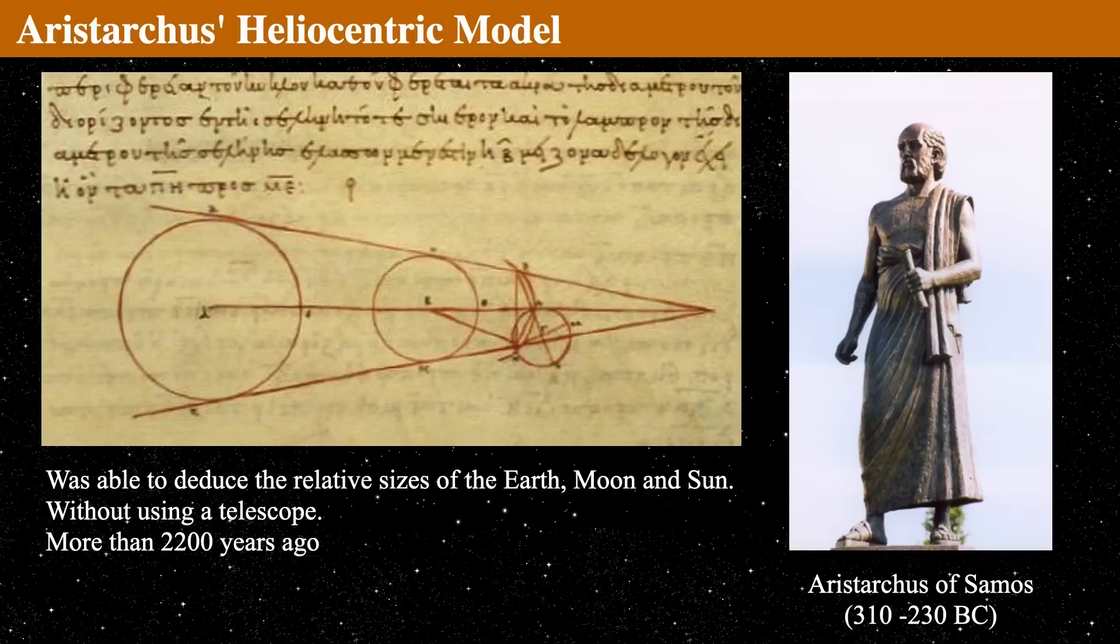And he was able to get a good estimate for the exact distance to the sun and the exact distance to the moon and their relative sizes as well. How did he do this? He did this all by eye and by hand.